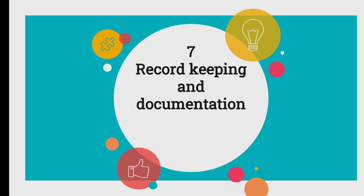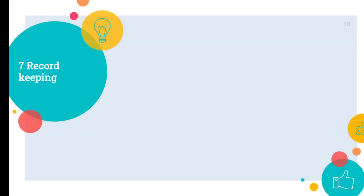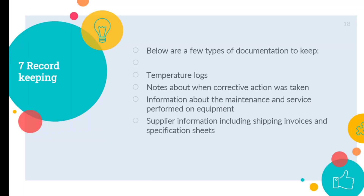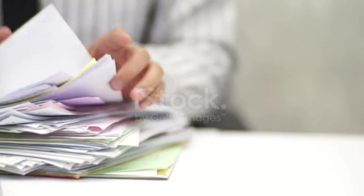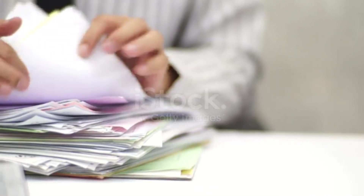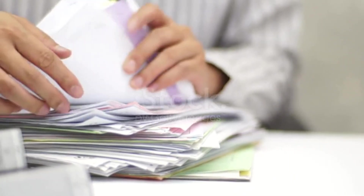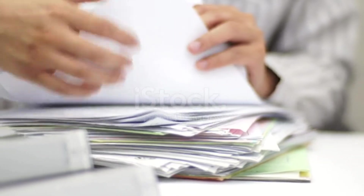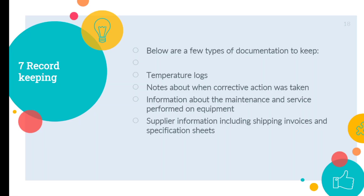The seventh step is Record Keeping and Documentation. Keeping records allows you to stay organized and effectively respond to food safety hazards. That's why developing procedures for accurate record keeping is the final stage of implementing a HACCP plan. So this is all about the seven principles of the HACCP plan. Thanks for watching. Do like, share, and subscribe.